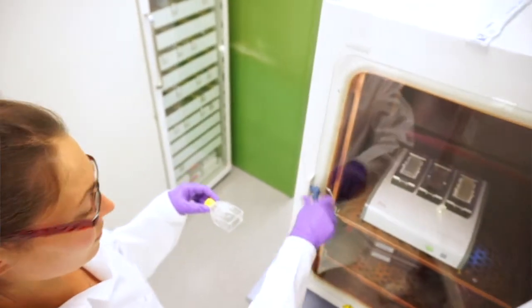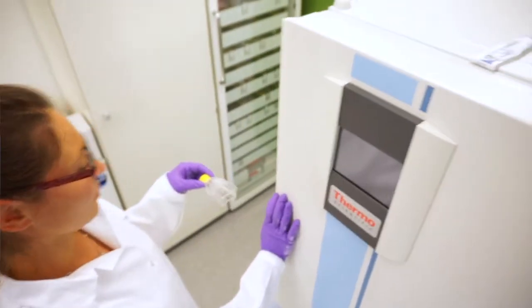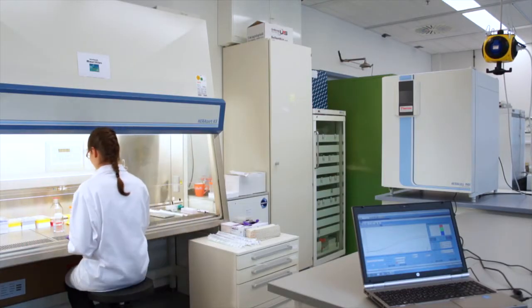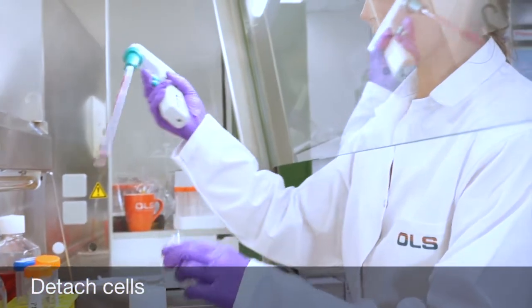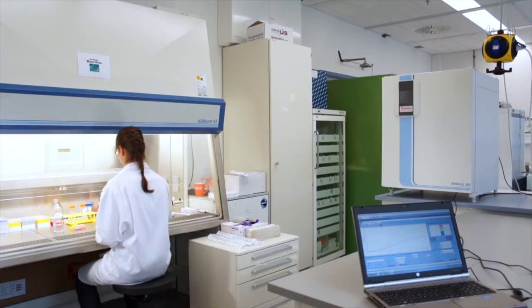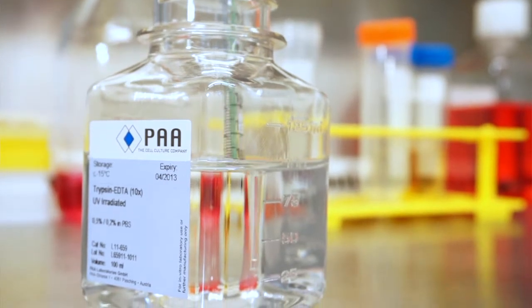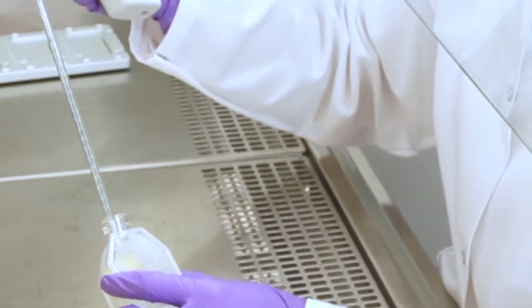Perform a cell migration experiment with the xCELLigence DP system. The station is positioned in the incubator, connected by cable to the computer, and provides three independent slots for 16-well plates.